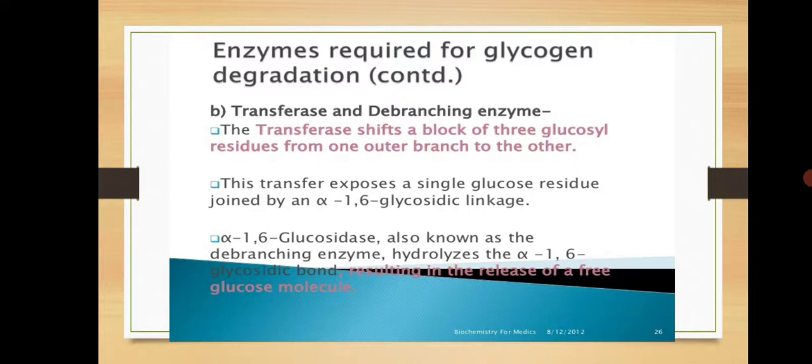Once glycogen phosphorylase reaches the branching point, it stops its activity, and then the debranching enzyme does its work. Debranching — 'de' means removal — so the debranching enzyme cleaves and separates the branch. That is the main function of the debranching enzyme.